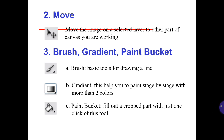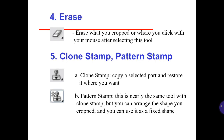Number 3: Brush, Gradient, Paint Bucket. A: Brush — basic tool for drawing a line. B: Gradient — helps you paint stage by stage with more than two colors. C: Paint Bucket — fills out a selected area with just one click. Number 4: Erase — erases where you click with your mouse after selecting the tool.